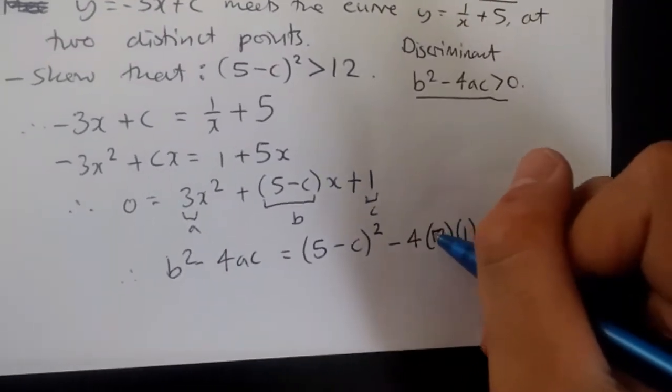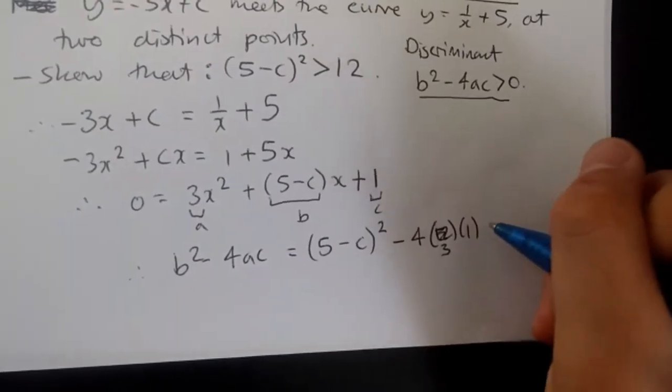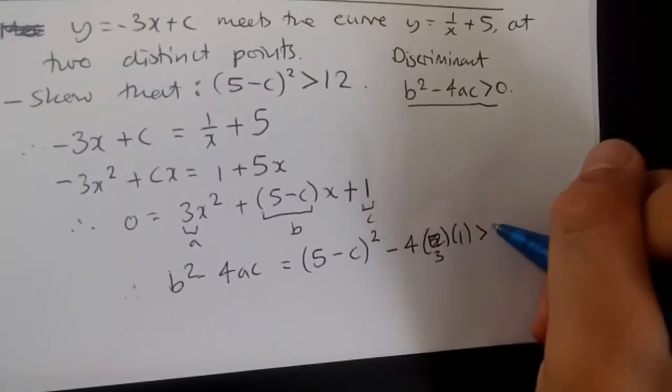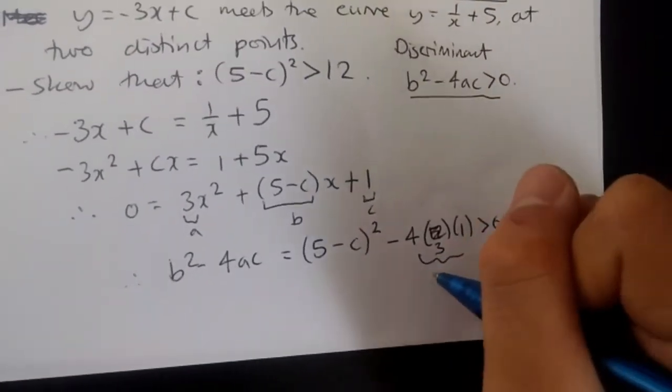b squared minus 4ac should equal 5 minus c all squared minus 4 times 3 times 1, which has to be bigger than 0. I somehow mentally solved it. 4 times 3 times 1 would be 12. So, of course, this part is 12.